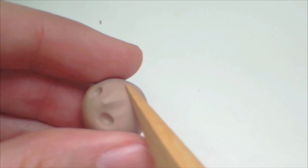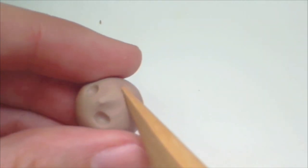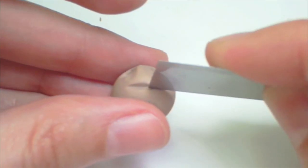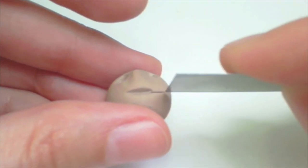Use whatever tool you have that will make a similar shape to make the opened part of his mouth. Then use a smaller tool to finish the rest of his mouth.